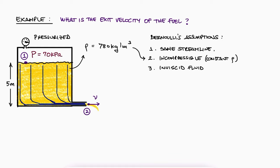Finally, we can assume the tank is big enough that for the short time we are analyzing, the 5-meter height is barely changing. This is important for two reasons: first, to meet the steady-state requirement; and second, to know that the fluid's velocity at point 1 is negligible. From what we learned today, if all these assumptions are met, the three pressure terms of the Bernoulli equation added together are the same at point 1 and point 2 along the same streamline. We have 70 kilopascals for P1 — gauge pressure — 0 for V1, and 5 meters for Z1. At the exit at point 2, we have atmospheric pressure, which is 0 in gauge pressure, the unknown exit velocity V2, and Z2 equals 0 since our datum is at point 2.